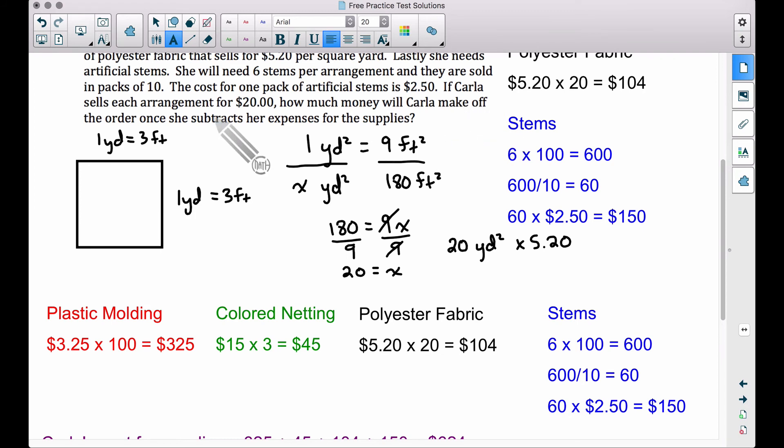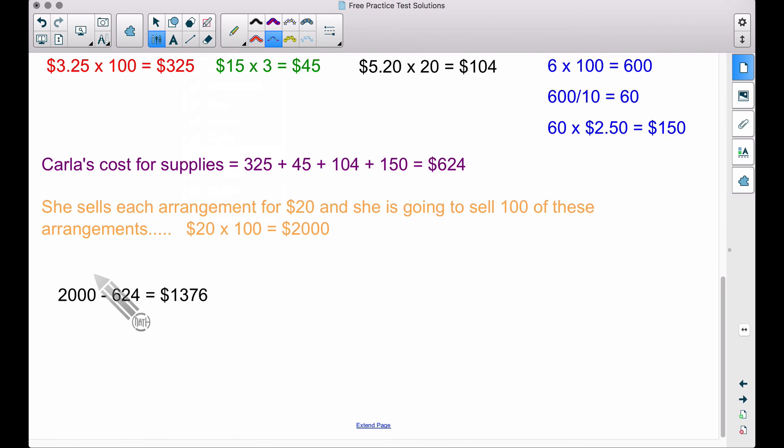Now the question states, how much money will Carla make off the order once she subtracts her expenses for the supplies? So she's going to bring in $2,000. Let's subtract off her expenses. Think of this number here, which is our answer as the profit that she's making. Carla's going to make $1,376 off of this order after she subtracts her expenses.